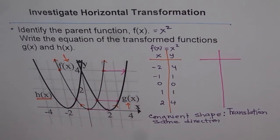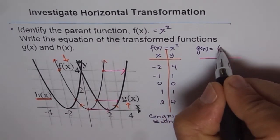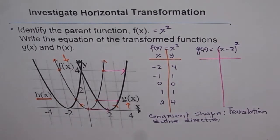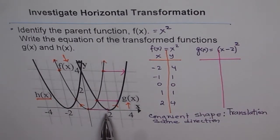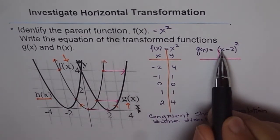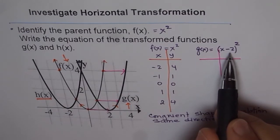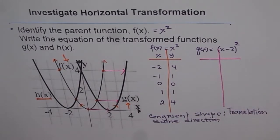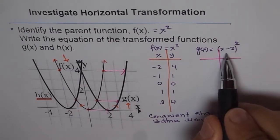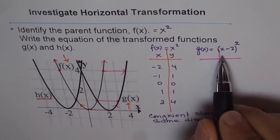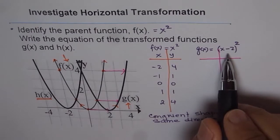We can write the transformed function as g(x) = (x − 2)². When moving two units to the right, why do we write minus two? Look at the vertex — we need zero at the vertex, which we get when x equals 2: 2 minus 2 equals 0. That is why we have minus 2. Another way to understand: for inside functions, the reverse happens — it's like inside out. If it says minus 2, we actually move right by 2. Horizontal transformations always work in reverse.